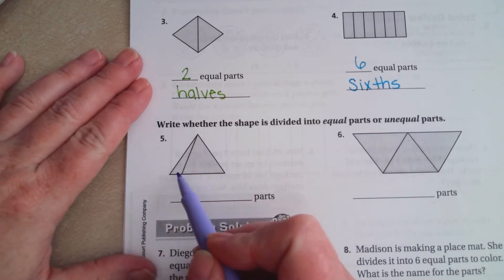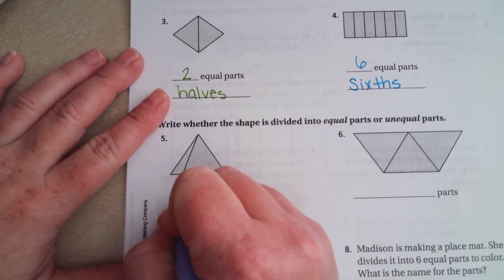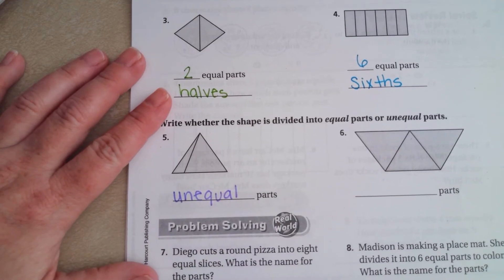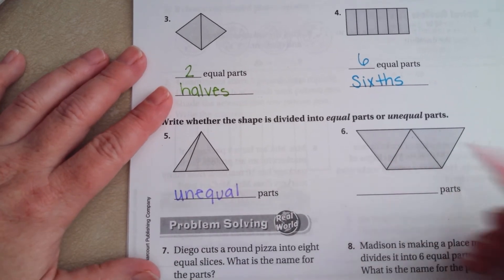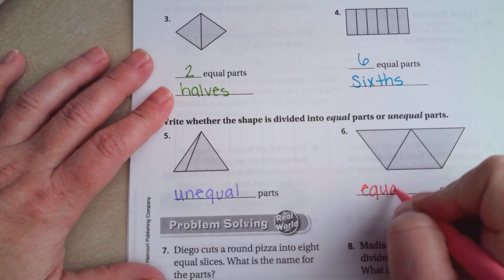So, this line's all the way over here. Those are definitely not equal. So, unequal. You can tell just by looking at this guy that there's three parts and that they are equal parts.